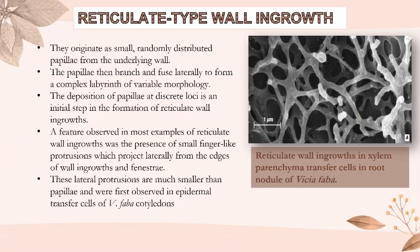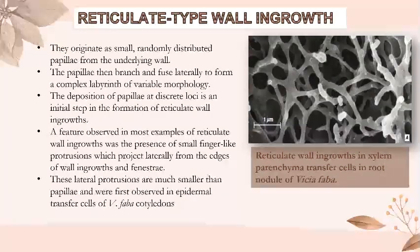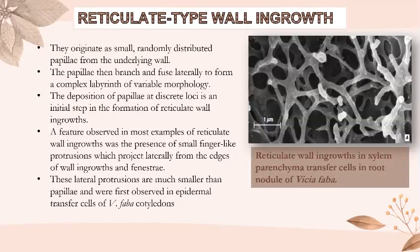Reticulate-type wall ingrowths originate as small, randomly distributed papillae. The papillae then branch and fuse laterally to form a complex labyrinth. For example, reticulate wall ingrowths in xylem parenchyma transfer cells in root nodule of Vicia faba.